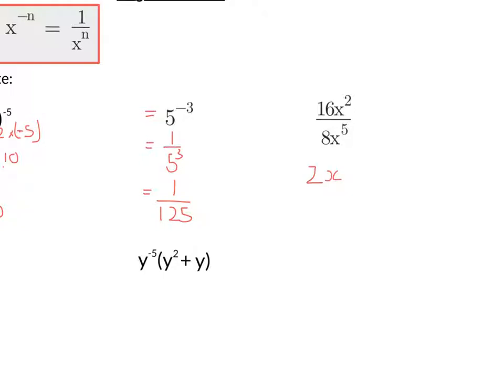And then we've got x. Well, if I'm dividing, then I take away my powers. So that's going to be 2 take away 5. So I've got 2x to the negative 3.